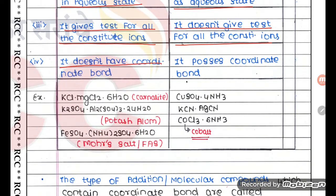Double salt does not have a coordinate bond, whereas complex salt possesses a coordinate bond. For example, CuSO4·4NH3 is a complex salt.